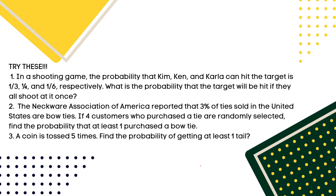Try these at home: In a shooting game, the probability that Kim, Ken, and Carla can hit the target is 1/3, 1/4, and 1/6 respectively. What is the probability that the target will be hit if they all shoot at it once? Also, 3% of ties sold in the US are bow ties — if four customers who purchase a tie are randomly selected, find the probability that at least one purchases a bow tie. And: a coin is tossed five times — find the probability of getting at least one tail. Thank you everyone for watching Kasiligan Vlogs, and God bless!